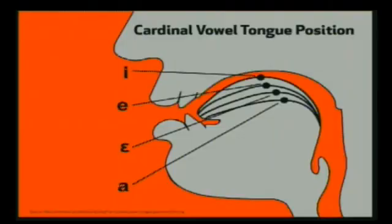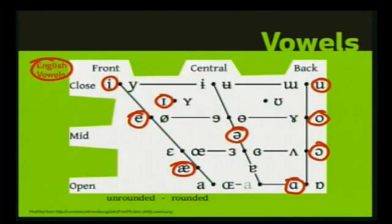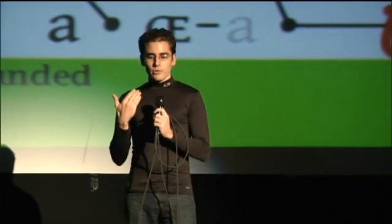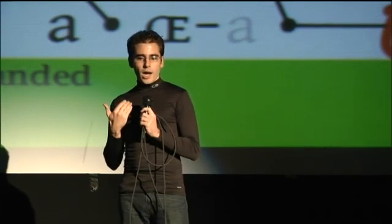Vowels, on the other hand, can be described by the height of the tongue. With E, your tongue is very high in your mouth, and with A your tongue is very low — and there are various levels in between. The other metric is whether your tongue is forward or back in the mouth. So front, close vowels would be like E. On the other hand, you've got back, low, open vowels, which would be something like A.